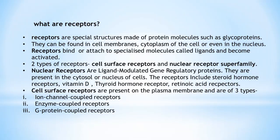In order to understand what GPCRs are and how they function, we first need to understand what receptors are. Receptors are specialized structures made of protein molecules such as glycoproteins, found in cell membranes, cytoplasm, or even the nucleus. Glycoproteins are proteins connected with carbohydrate chains. Receptors bind to specialized molecules called ligands, which cause the receptors to become activated.